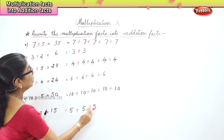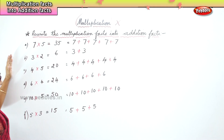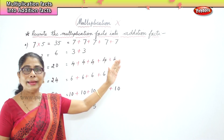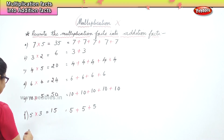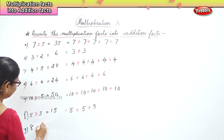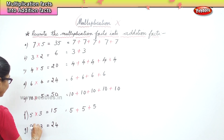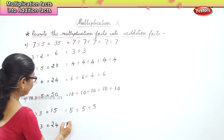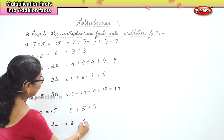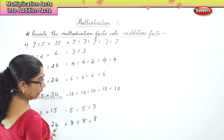This is called the addition fact. When you are given a multiplication fact, you will write the addition fact. One more example: eight, three times. Eight plus eight plus eight.